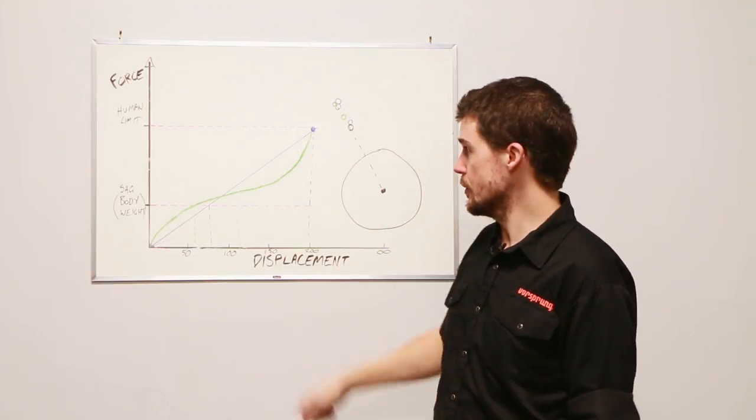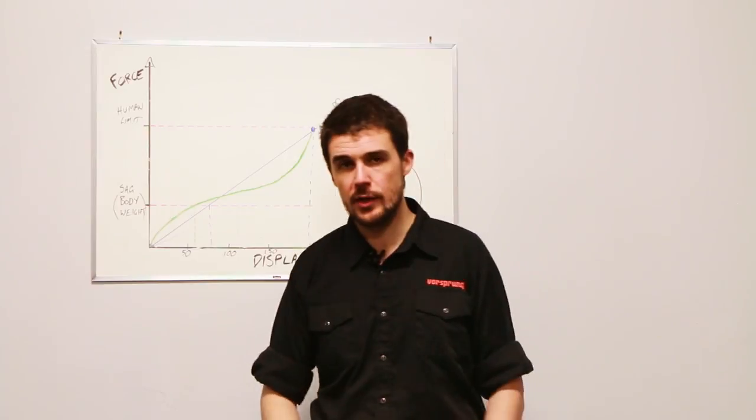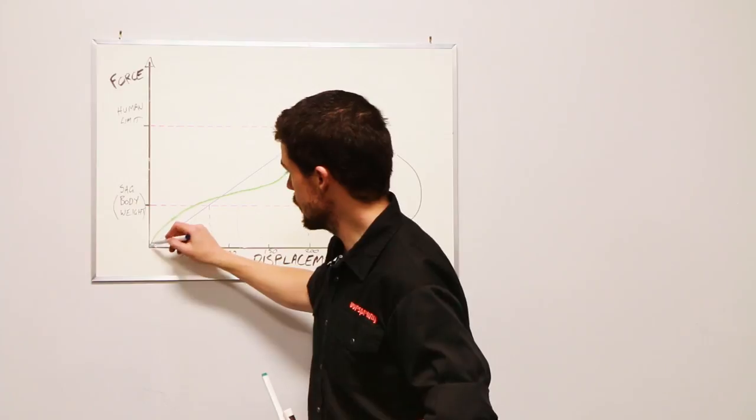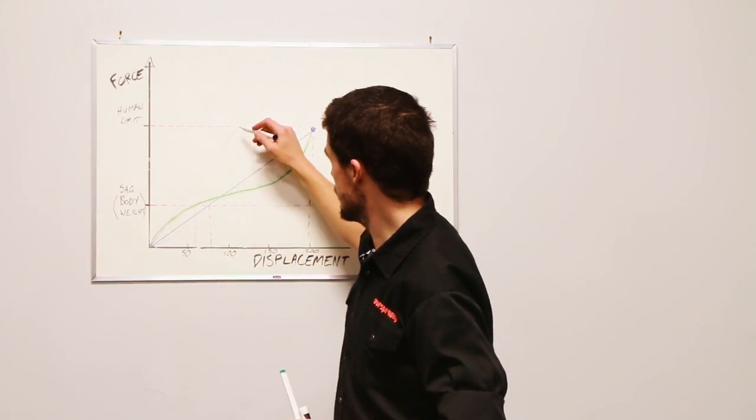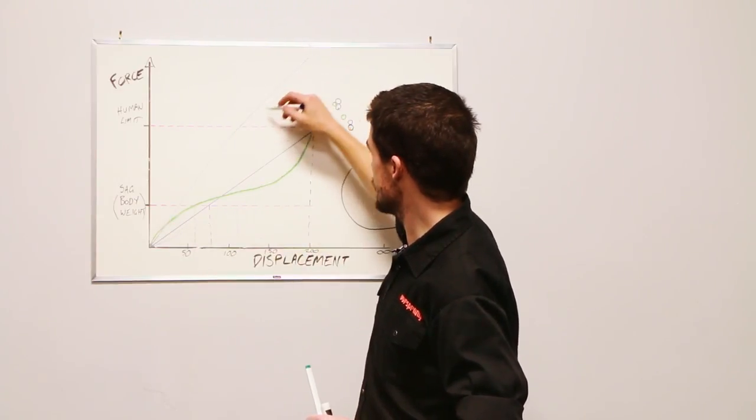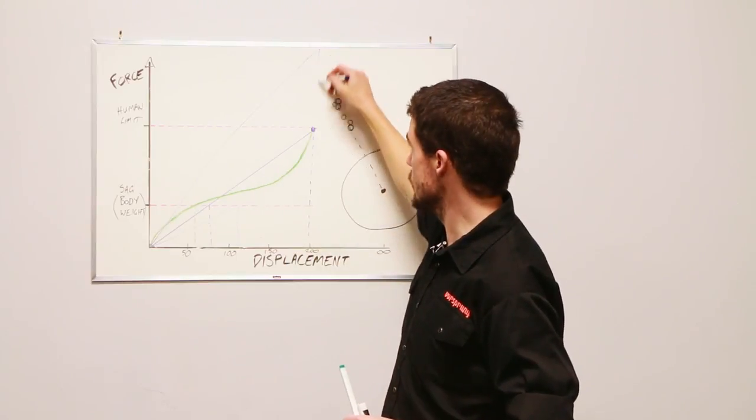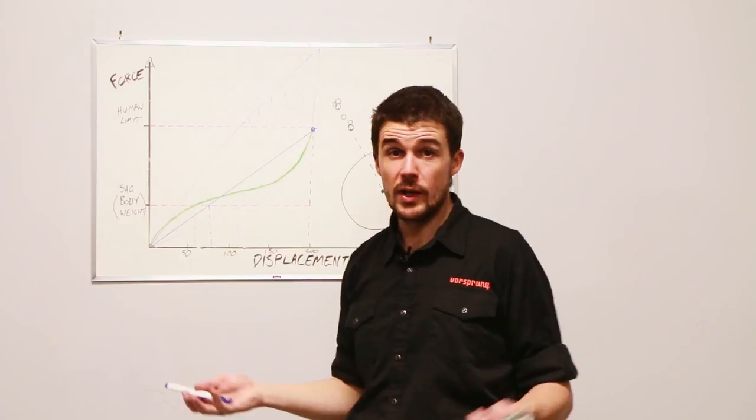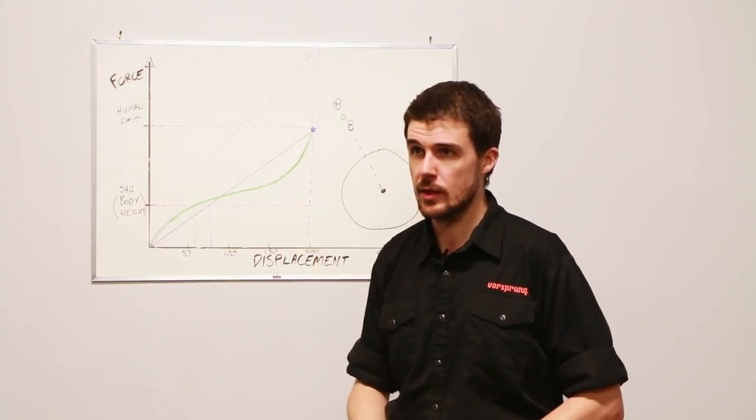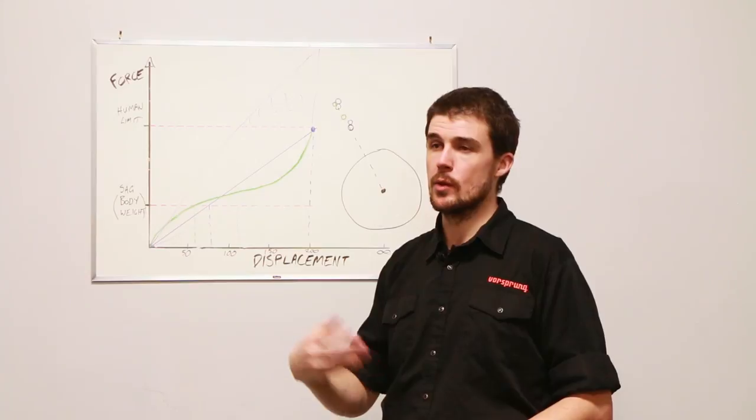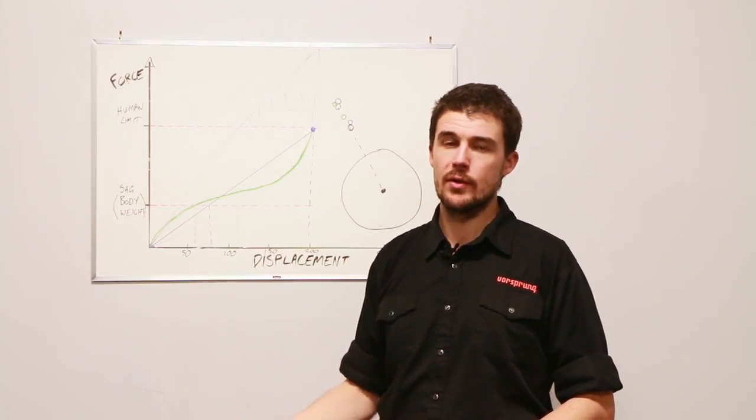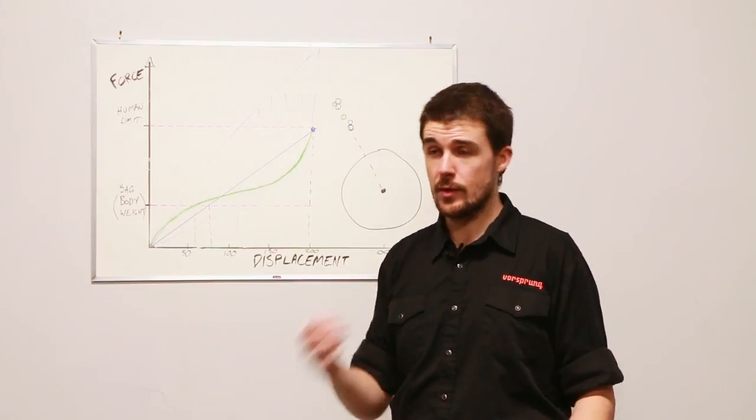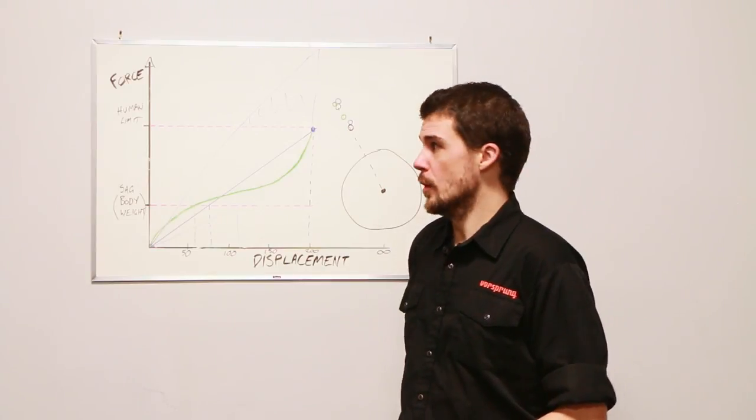But once we have a spring rate that is twice as stiff, as we illustrated previously, you can only generate so much force. And so when that spring rate doubles, all of a sudden, all the rest of this travel is above the amount of force that you can generate. You essentially can't reach that travel. And then we have the condition where people start wondering, how do I get full travel out of my fork? If I run it stiff enough to be supportive the way that I want it to be, I can't use full travel.